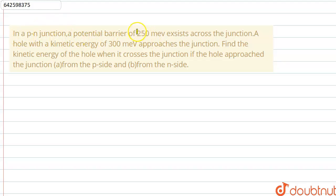Hello everyone. Question is: In a p-n junction, a potential barrier of 250 milli electron volt exists across the junction. A hole with a kinetic energy of 300 milli electron volt approaches the junction. Find the kinetic energy of the hole when it crosses the junction.